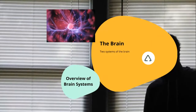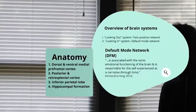The brain itself can be divided along a lot of different lines, but today I want to look at two different systems of the brain. We'll have a brief overview of that. Those two systems are what are sometimes called the looking out system or the task positive network, and the looking in system or the default mode network.